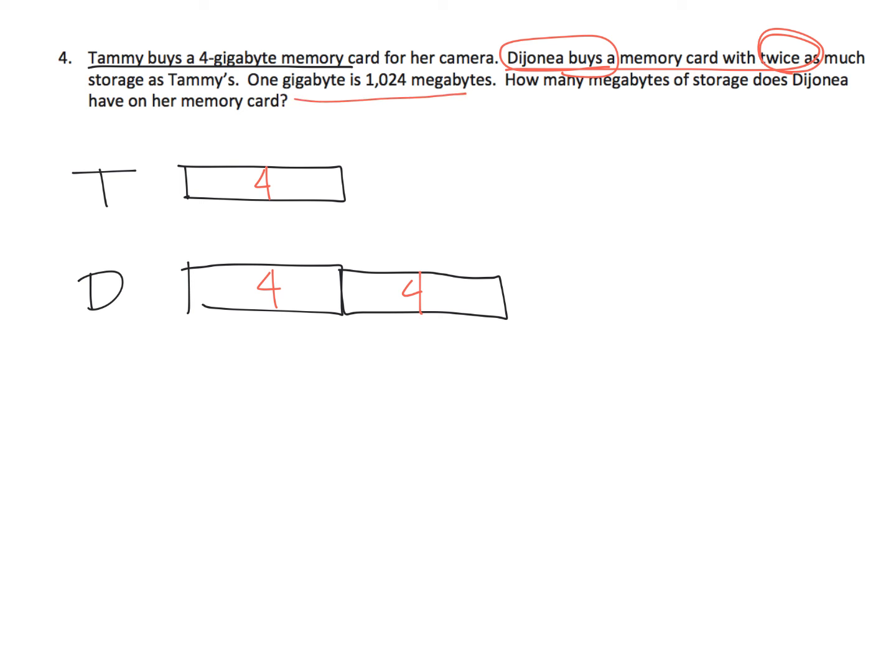So 1 gigabyte is 1,024 megabytes. How many megabytes does Dijonia have? So basically, we want to know this, which is going to be 1,024 multiplied by 8. Now, where the heck did I get the 8 from? Right here. 4 plus 4 is 8. So let's multiply.